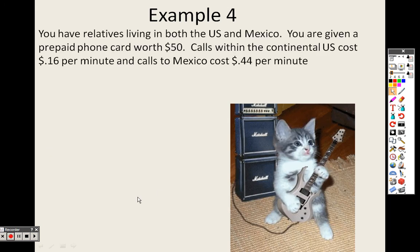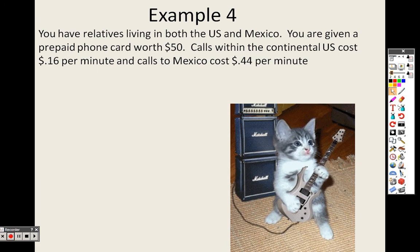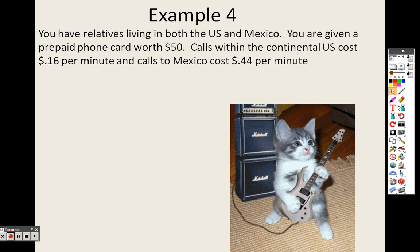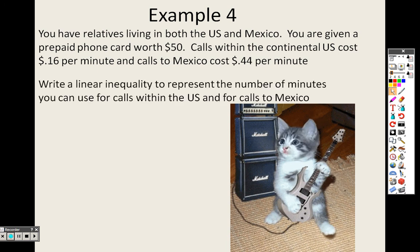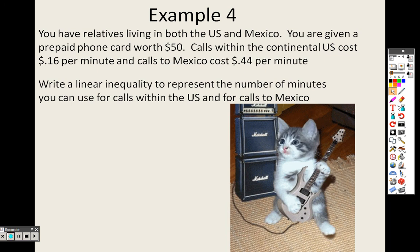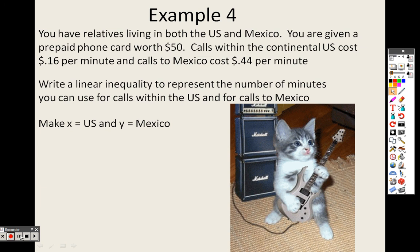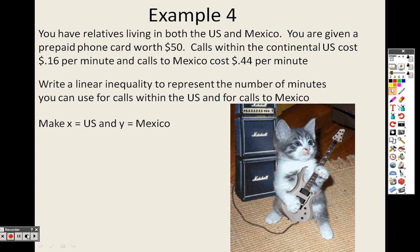In Example 4, you have relatives living in both the U.S. and Mexico, and you are given a prepaid phone card worth $50. Calls within the continental U.S. cost $0.16 per minute, and calls to Mexico cost $0.44 per minute. We are going to write a linear inequality to represent the number of minutes you can use for calls within the U.S. and to Mexico. We'll finish this word problem when we come back.